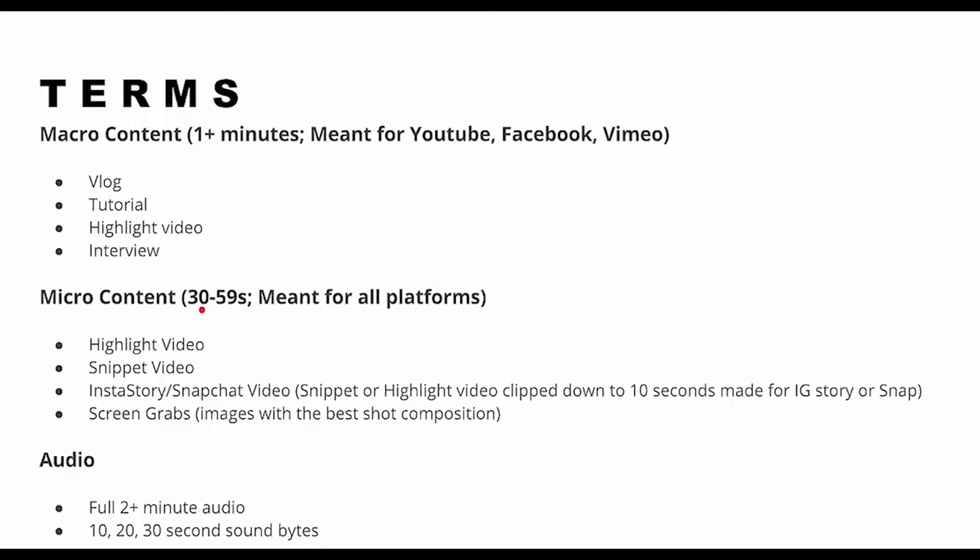Micro content is anything from 30 to 59 seconds, meant for all platforms. This is flexible in that as long as it's meeting a certain standard of storytelling, educating, empowering, or entertaining, we can share it on all platforms. You don't want to share a random 30 seconds of nothing on YouTube. For my personal brand, I prefer content that has a point — leading them to something bigger, like a 30-second freestyle video leading to a tutorial. A lot of content has to have intent and purpose that plays into the bigger picture.